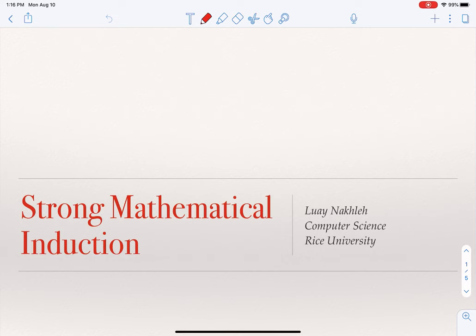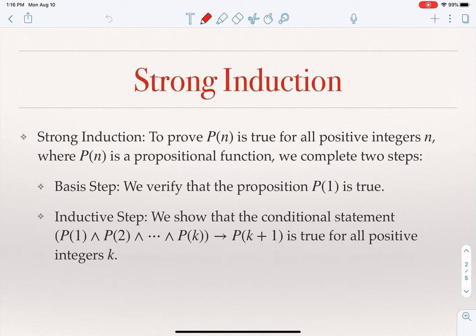A special version of mathematical induction is what we call strong mathematical induction. Strong mathematical induction differs from standard mathematical induction in the inductive step, where we now show not P(K) implies P(K+1), but we show that the conjunction of P(1), P(2), P(3), and all the way to P(K) implies P(K+1).